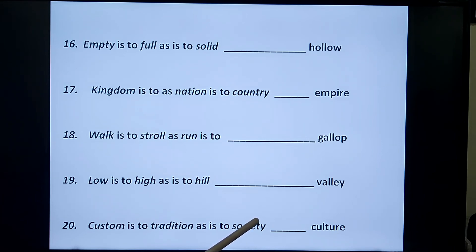Nineteen: low is to high as hill is to valley. I repeat it again, low is to high as hill is to valley. Hill and valley has similarity in low and high.